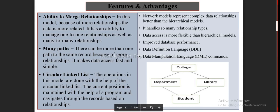Circular linked list: the operations in This model are done with the help of the Circular linked list. The current position is Maintained with the help of a program and Navigates through the records based on Relationships. Network models represent complex data relationships Better than the hierarchical models. It handles so many relationship types, data access is more flexible than hierarchical models, improved database performance, data definition language DDL, data manipulation language DML commands. Page 58 of 270.